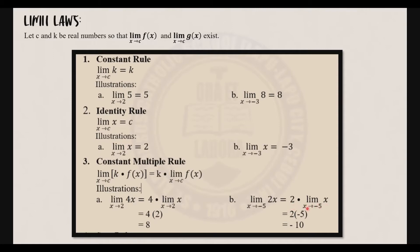Next example: the limit of 2x as x approaches negative 5 is equal to 2 times the limit of x as x approaches negative 5. Applying the identity rule, the limit of x as x approaches negative 5 is negative 5. So 2 times negative 5 is negative 10.